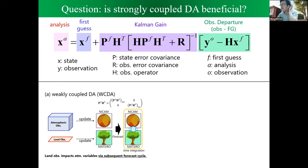Let's get started. This is the well-known Kalman filter equation. We would like to get the analysis by combining the observation and the forecast. Usually in numerical prediction research, we consider the so-called weakly coupled data assimilation. In this case, atmospheric observation is used to update the atmosphere variables, and land observation is used to update the land variables.